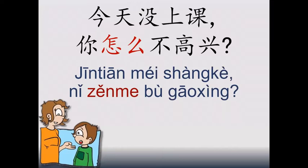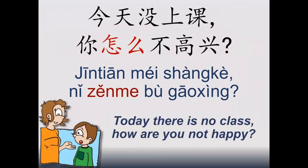今天没上课，你怎么不高兴？ — Today you don't have lessons, you don't have school. How can you not be happy? So here we can see that the mom is surprised because the boy is not happy — he has some free time, he has no lessons. To express this surprise, mom is using zěnme.